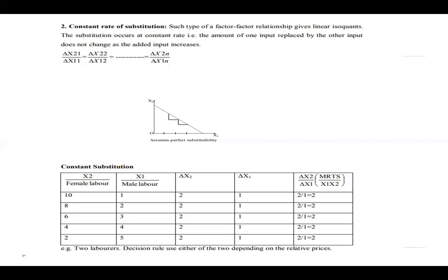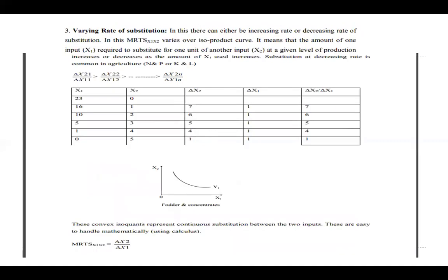Now we look at varying rate of substitution, which includes two types: increasing rate and decreasing rate. Here the MRS of x1 and x2 varies over the isoproduct curve — the amount of x1 required to substitute one unit of x2 either increases or decreases as the amount of x1 used increases. Substitution at a decreasing rate is the most common case in agriculture — this is a very important point.